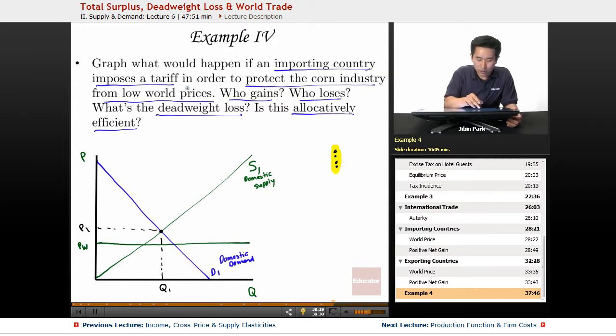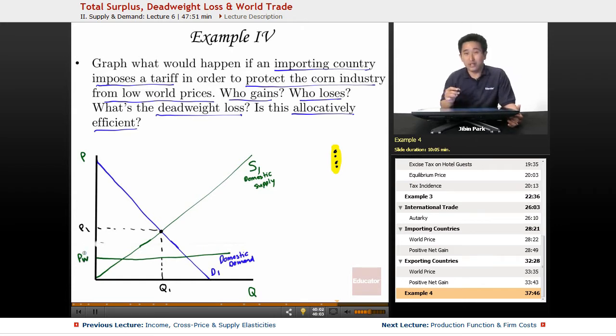So when the government imposes a tariff what's going to happen? Actually I'm going to draw the PW a little bit lower just so that I give myself a little bit more space here. So in this case the government's looking at this world price - how can American corn producers compete? So the government's going to try to step in and impose a tariff. A tariff is a tax that adds to the price of the world price. So let's draw what happens - this is the price of the world plus the tariff here.